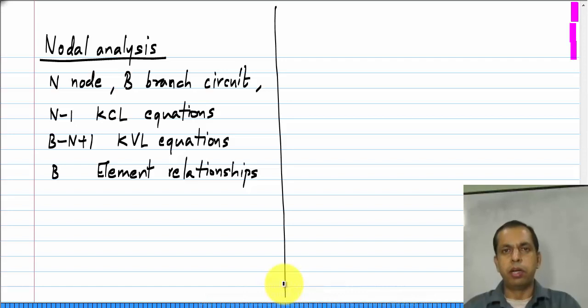Now depending on which of these two you do first, whether you first write KCL equations or KVL equations, there are different types of analysis. If you start off with KCL equations at n minus 1 nodes of the circuit, it is known as nodal analysis. And if you start with KVL equations around b minus n plus 1 loops of the circuit, it is known as loop analysis and a variant of is called mesh analysis.